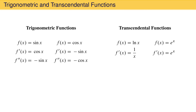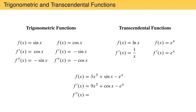Let's combine these rules with the sum and power rules to find the successive derivatives of the function 3x cubed plus sine x minus e to the x. The first derivative is 9x squared plus cosine x minus e to the x. The second derivative is 18x minus sine x minus e to the x. Notice how the sum rule lets us take the derivative of each term in the sum individually without considering the other terms.